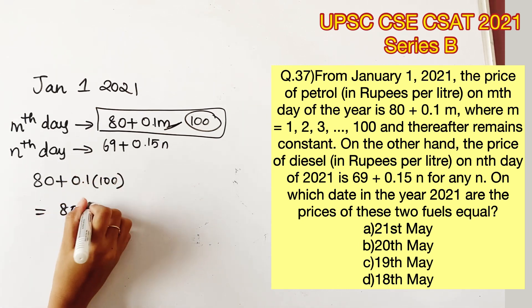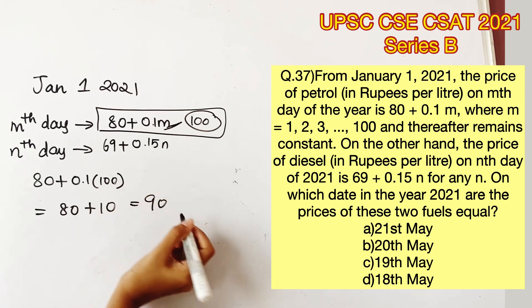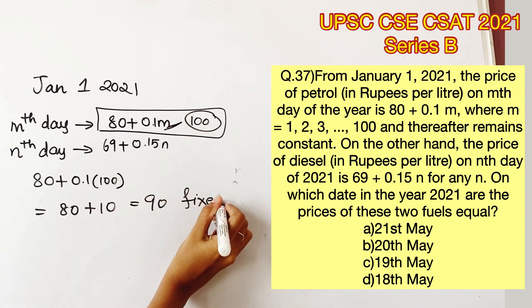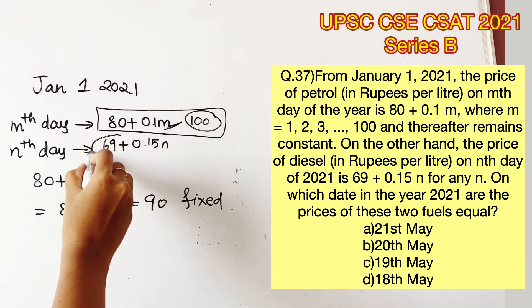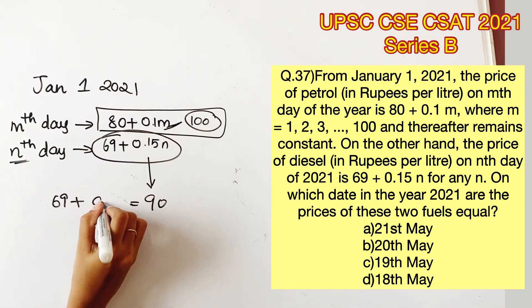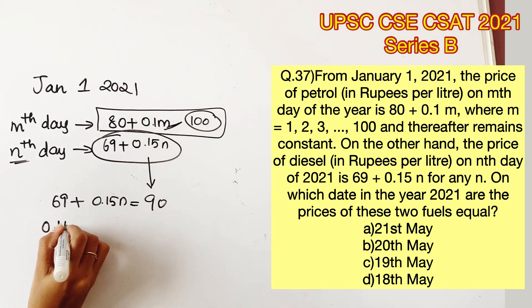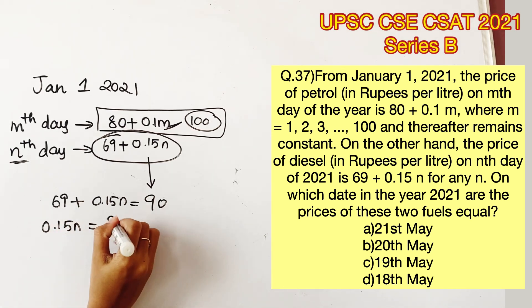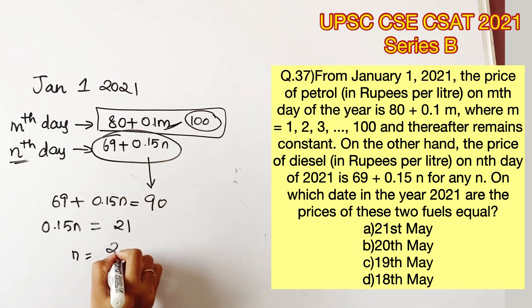We can now substitute the value of m = 100 into the petrol equation: 80 plus 0.1 × 100 = 80 plus 10 = 90. This value is fixed for any May day. All we have to do now is equate this fixed petrol price to the diesel equation to find on which day the price of diesel is also going to be 90.